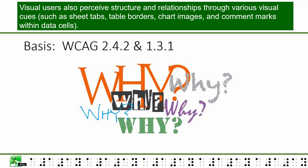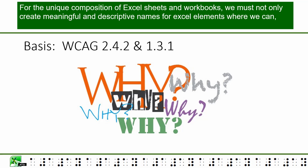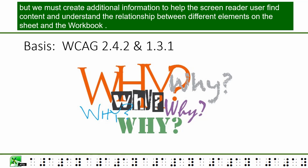Visual users also perceive structure and relationships through various visual cues, such as sheet tabs, table borders, chart images, and comment marks within data cells. For the unique composition of Excel sheets and workbooks, we must not only create meaningful and descriptive names for Excel elements where we can, but we must create additional information to help the screen reader user find content and understand the relationship between different elements on the sheet and the workbook.